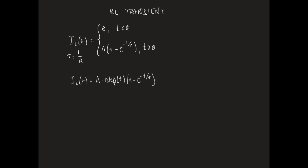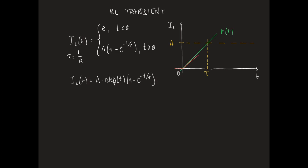If we want to plot IL of t, we just need to follow the rules we discussed in the case of the charge of a capacitor, where the voltage across the capacitor also takes the form of a rising exponential. In the case of a rising exponential, we know that the function tends asymptotically to a value corresponding to the amplitude of the input step. We also know that the rising exponential at the origin is tangent to a straight line intersecting the asymptotic level at t equal to τ. Therefore, IL of t will be zero up to t equal to zero, then it will start increasing, keeping tangent to the straight line, and will asymptotically tend to A.